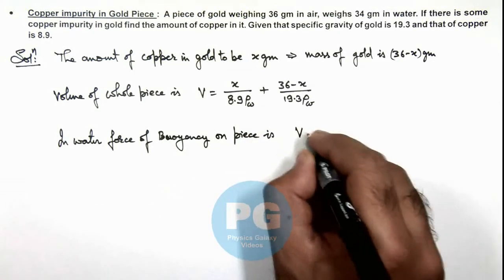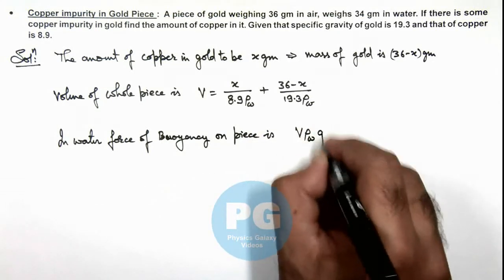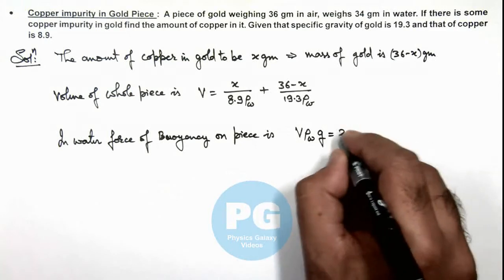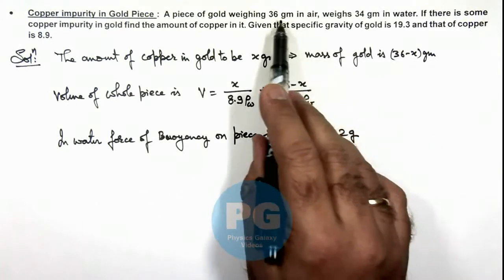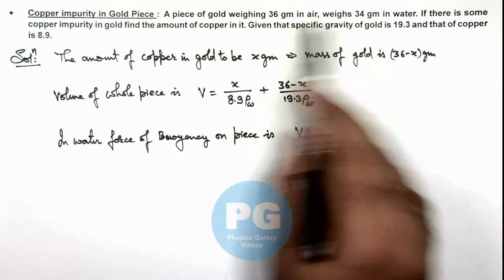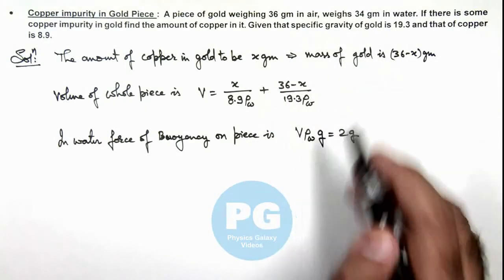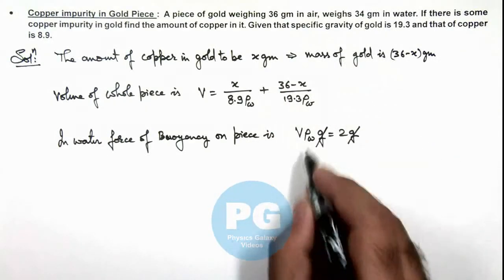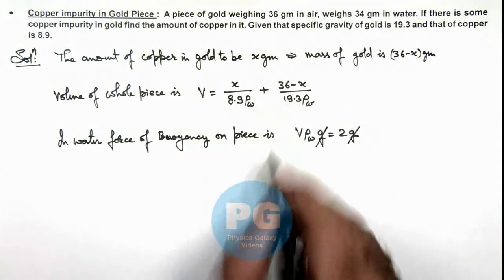So this will be V ρ water g, and that should be equal to 2g, because the difference of the two weights in air and water is 2 grams only. Here g gets cancelled out, and we can substitute the value of this volume.